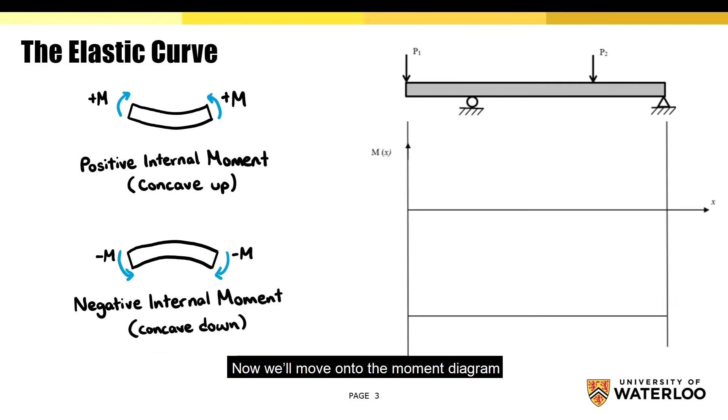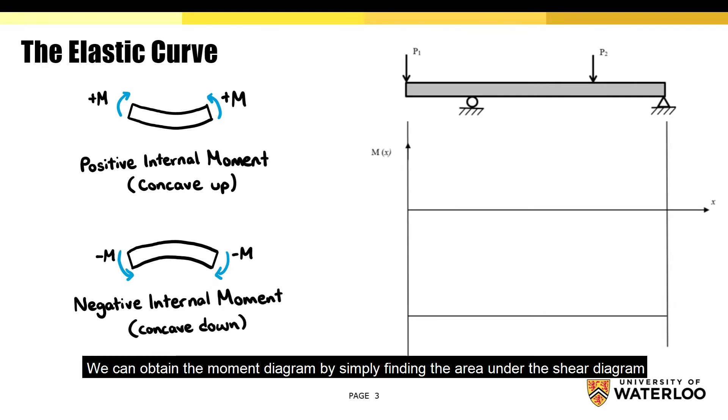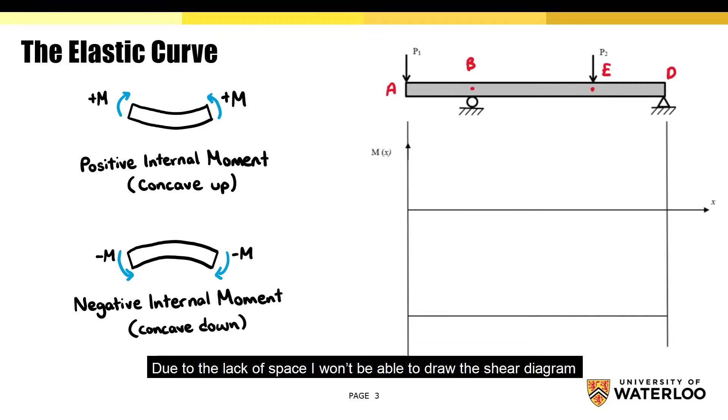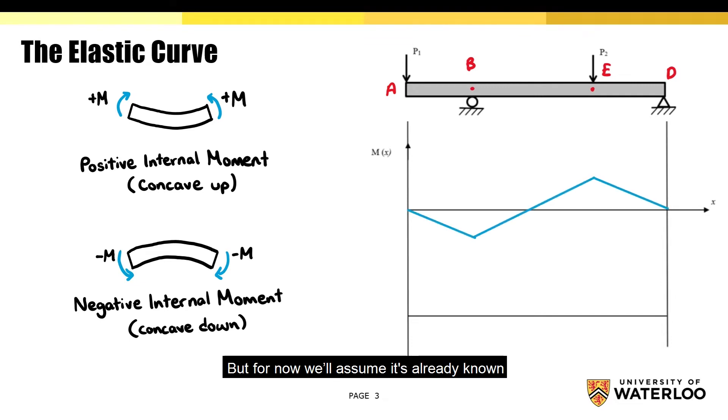Now we'll move on to the moment diagram. We can obtain the moment diagram by simply finding the area under the shear diagram. Due to the lack of space, I won't be able to draw the shear diagram, but for now we'll assume it's already known. And here is the corresponding elastic curve.